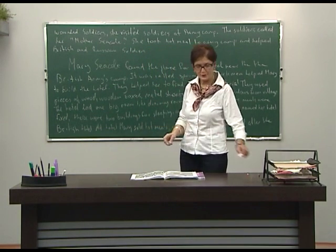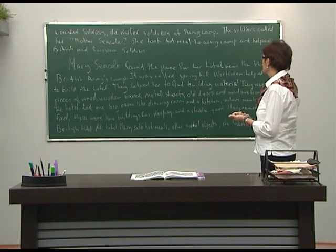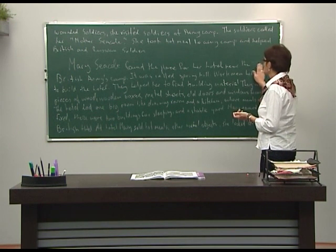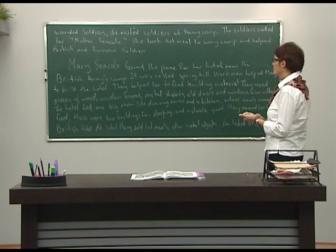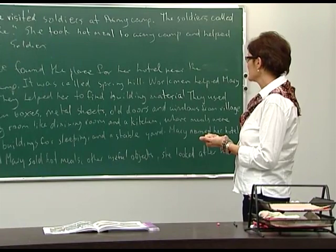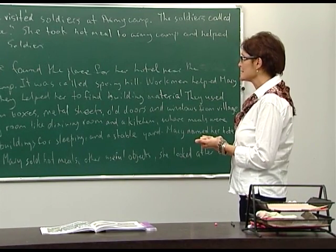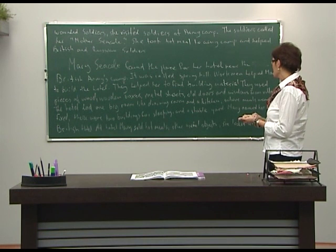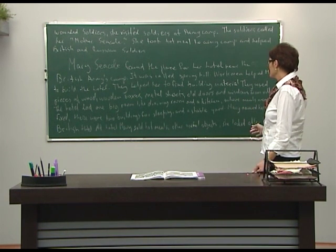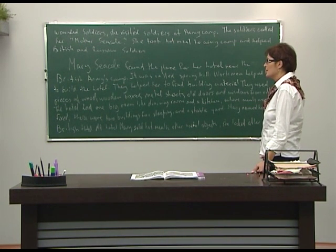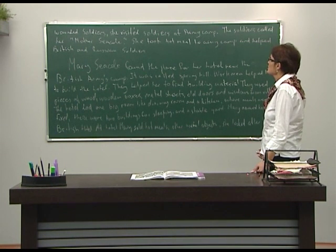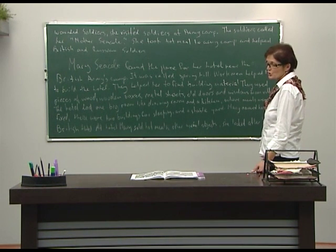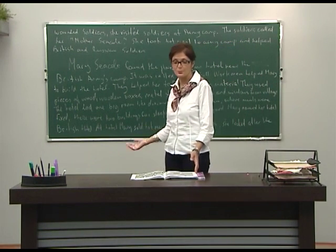Let's see what we've written. Mary Seacole found the place for her hotel near the British army camp. It was called Spring Hill. Workmen helped Mary to build the hotel. They helped her to find building material. They used pieces of wood, wooden boxes, metal sheets, and old doors and windows from the village. The hotel had one big room like a dining room and a kitchen where meals were fixed. There were two buildings for sleeping and a stable yard. Mary named her hotel the British Hotel. At the hotel, Mary sold hot meals and other useful objects. She looked after the wounded soldiers. She visited soldiers at the army camp — the soldiers called her Mother Seacole. She took hot meals to the army camp and helped British and Russian soldiers. That's how notes helped me to write this composition.